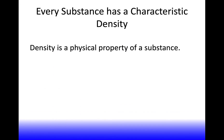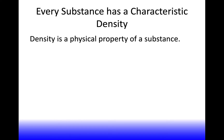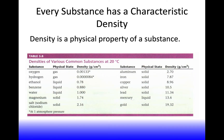Every substance has a unique density, so density is a physical property of a substance. Gases, liquids, and solids all have different densities. Gases have extremely small densities. Liquids are a little higher — except for mercury, which is very dense. Solids tend to be more dense in general than liquids.